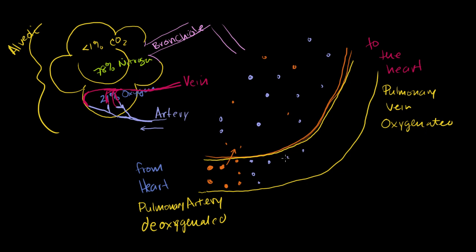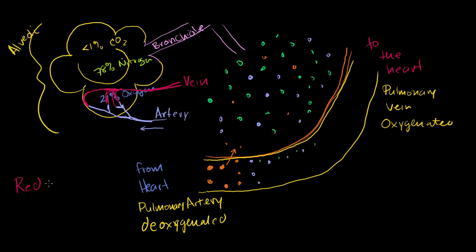I still haven't answered that interesting question: what happens to the 78% of nitrogen sitting in the alveolus? There's just a ton of nitrogen there — more than the oxygen and a lot more than the carbon dioxide. What happens to all those nitrogen molecules? The answer is that nitrogen can diffuse into the blood, but the blood's ability to take in nitrogen isn't that high. And that's where the red blood cells come into play.